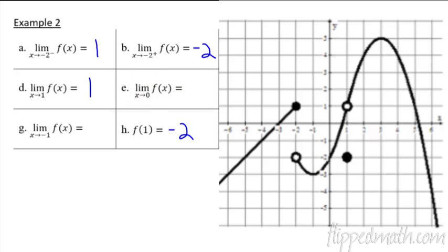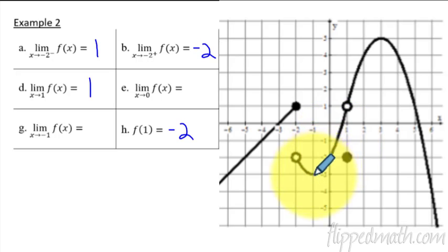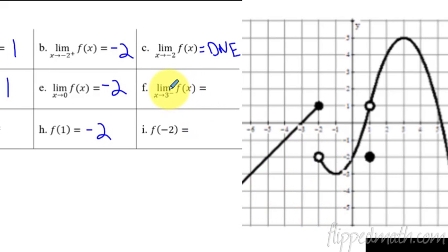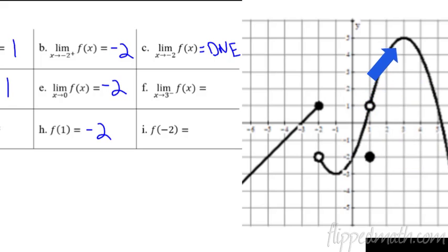The limit as x approaches 0 from both sides is a little easier. Both sides are coming together right there at a y value of negative 2 — pretty simple. Then we approach 3 from the left side. Going over to where x equals 3, approaching from the left side, the graph is approaching a y value of 5. That one's pretty straightforward.